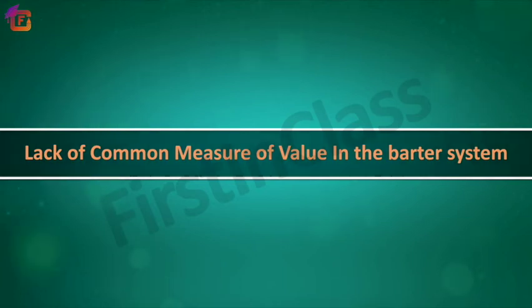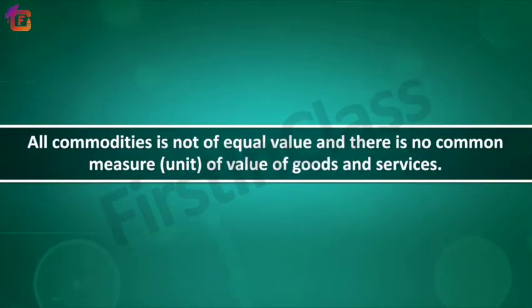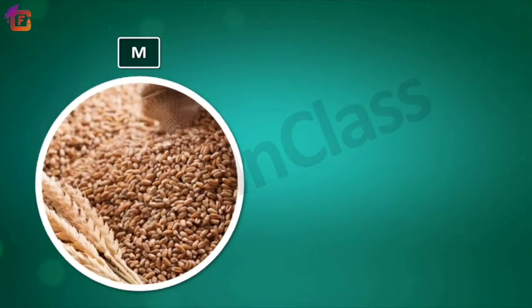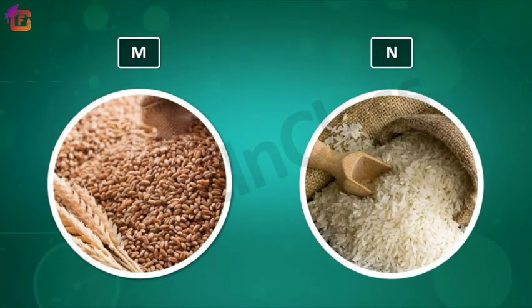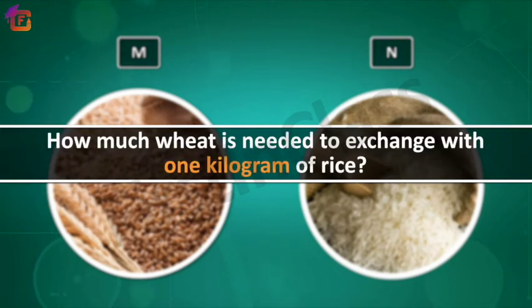Lack of common measure of value: in the barter system, all commodities are not of equal value and there is no common measure of value of goods and services in which exchange ratios can be expressed. For example, if M has wheat and N has rice, it is difficult to decide how much wheat is needed to exchange with one kilogram of rice. In the absence of a common measure, the exchange ratio is fixed randomly, in which one of the parties generally suffers.